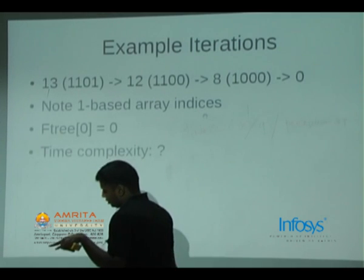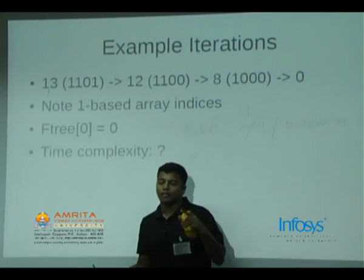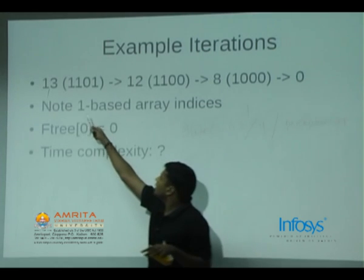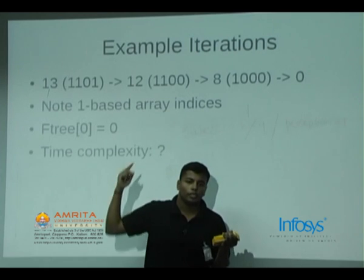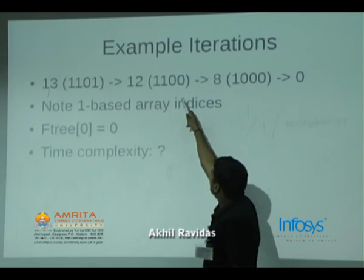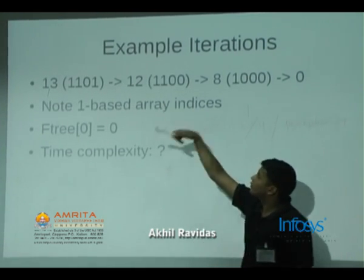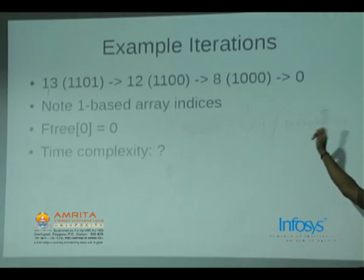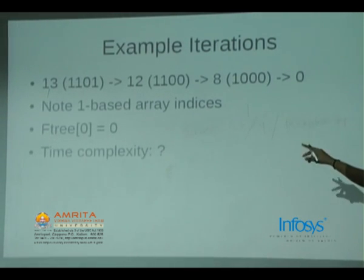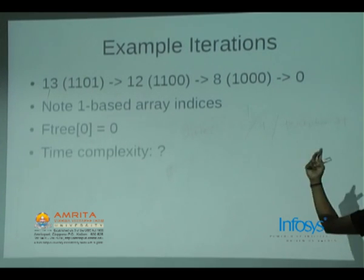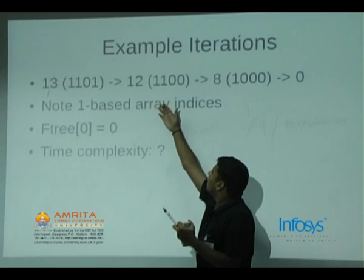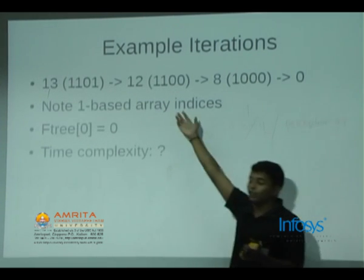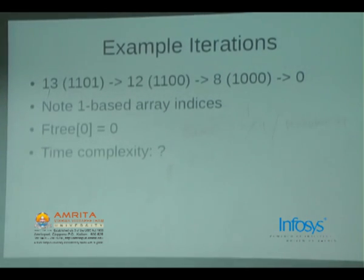FT stores lowbit(i) elements ending at i. So FT[13] stores only 13 (since 1 bit is set), and FT[12] stores 4 elements: indices 9 through 12. At each point I take what FT gives me up to that point, then remove the low bit to move to the next chunk and add the answer for the next segment.